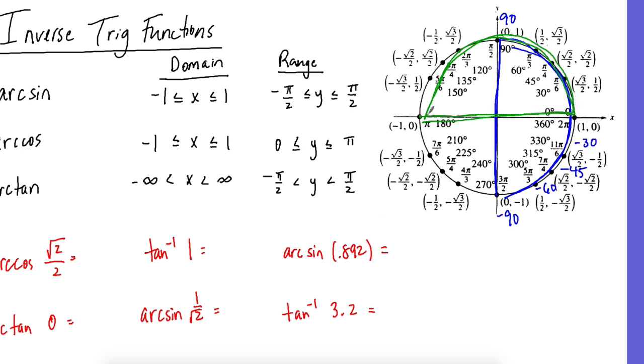So it's the top half of your circle. So if I'm looking for arc cosine square root of 2 over 2, cosine is the x coordinate. So where's cosine square root of 2 over 2? 45. Does it fall within the green? Yes, it does. So our answer is 45. Or pi over 4, depending on what it's asking.